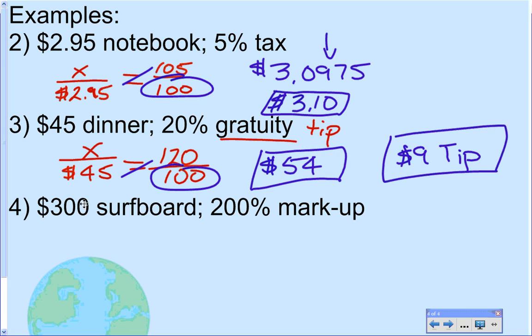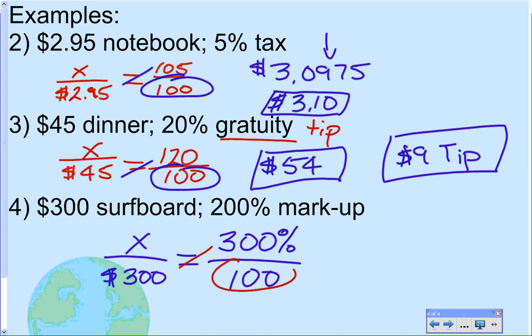And, now, the last example. $300 surfboard. The store is marking it up 200%. So, you've got to imagine they paid the surfboard maker $300. Now, they're going to try and sell it and make some money. So, they're going to mark it up 200%. So, you're going to pay 100% of this plus the 200% markup. So, really, you're paying 300%. So, again, I just added 100% to the percent, just like we did on all the others. The original cost goes down on the bottom. Cross, multiply, and divide. And, you get the final price of the surfboard is $900.